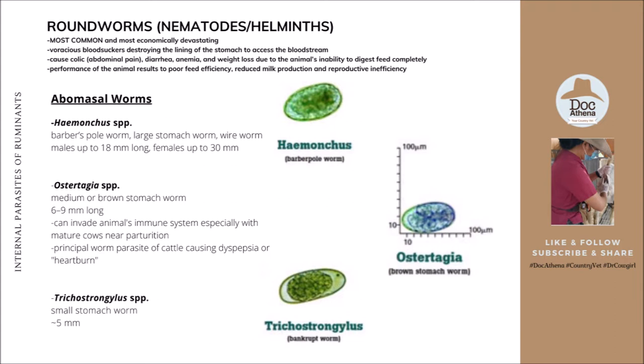Next is Trichostrongylus species, also called the small stomach worm, with a length of approximately 5 millimeters. On the right of this slide, you can see the fecal egg worms of Haemonchus or barber's pole worm, Ostertagia or the brown stomach worm, and Trichostrongylus or the bankrupt worms. Thank you to Intervet for these images of fecal eggs of the internal parasites of ruminants.